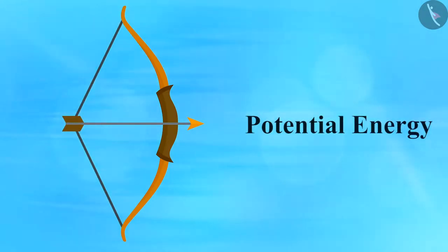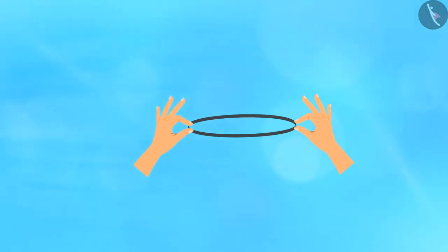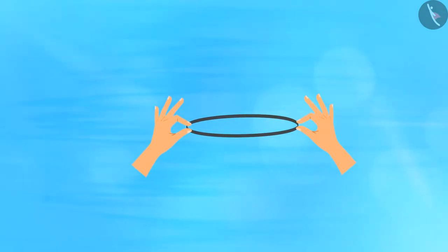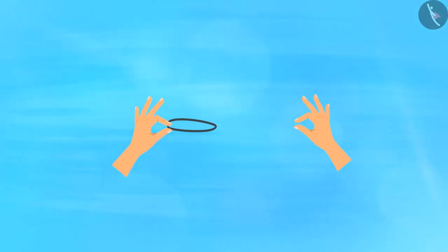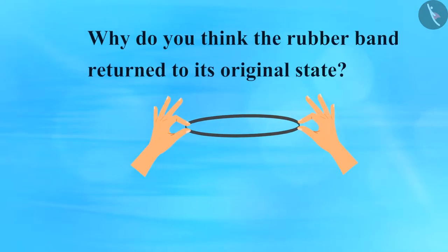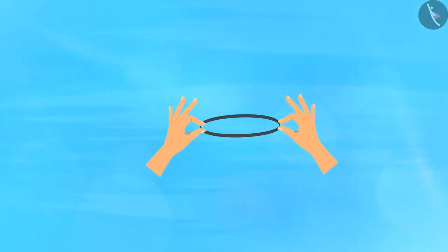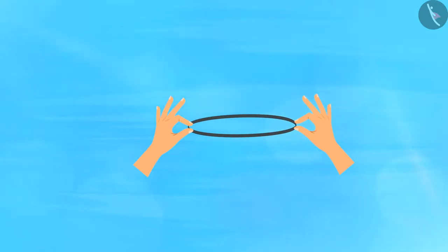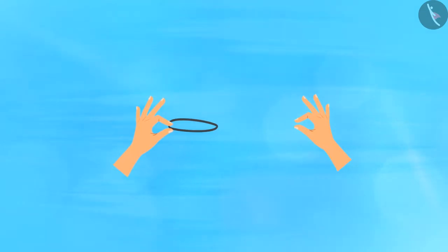Hold a rubber band in one hand and pull the band with the other hand — the rubber band will get stretched. Now release the rubber band from one end and you will see that the band returns to its original state. Why does the rubber band return? It is because the band acquired energy when it was stretched, and this energy causes it to return to its original state.